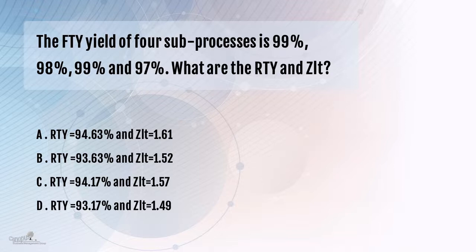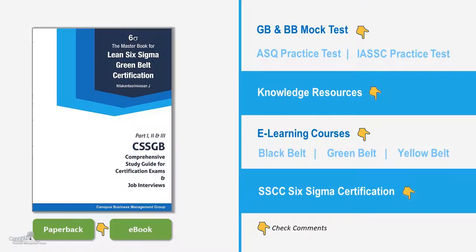The right answer is the fourth option, where RTY is 93.17% and Z long term is 1.49. You could have answered this just by calculating the RTY, which would have saved some time.